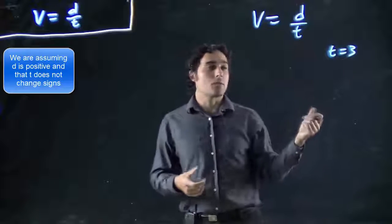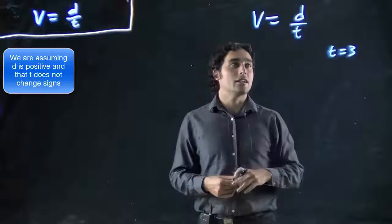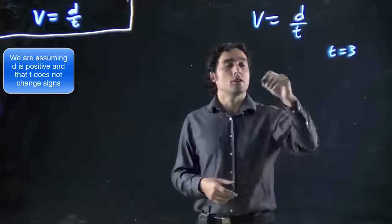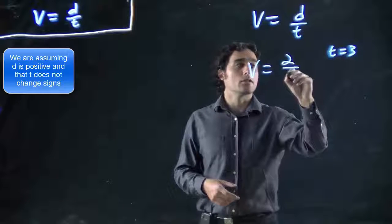We also pick an arbitrary number for d. Let's say d is 2. So what do we get then? v equals 2 over 3.